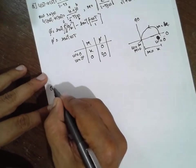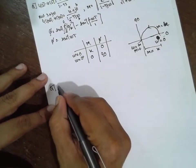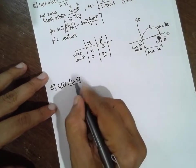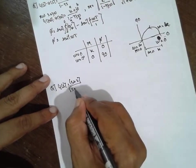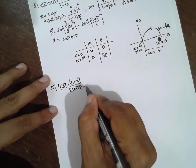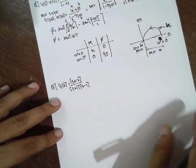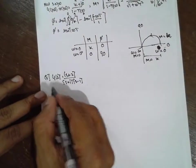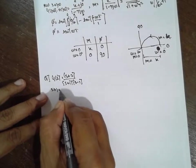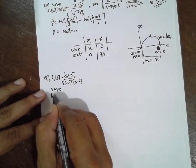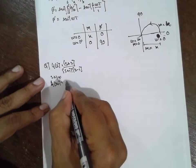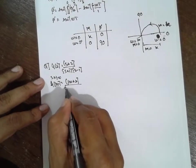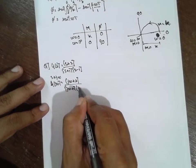One more special problem. G of S is equal to (s plus 2) divided by (s plus 1)(s minus 1). This is also a special problem. Substitute s equal to jω. G(jω) equals (jω plus 2) divided by (jω plus 1)(jω minus 1).